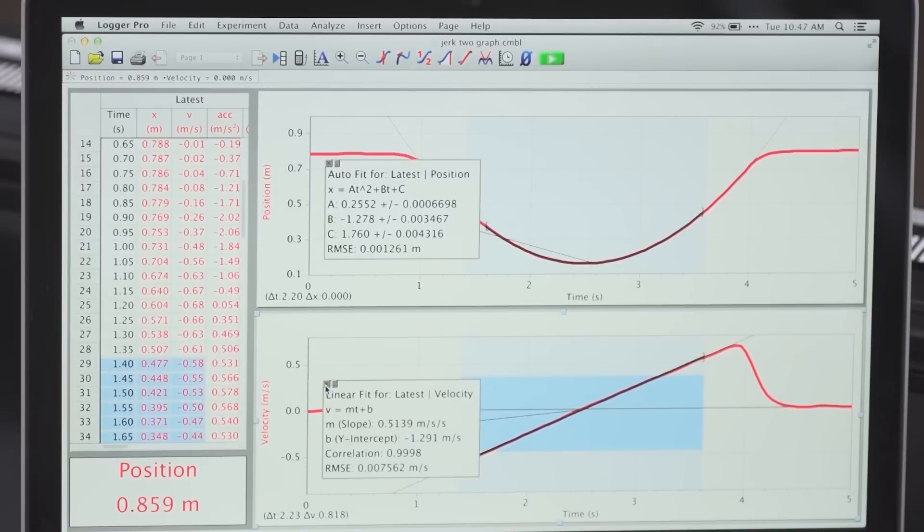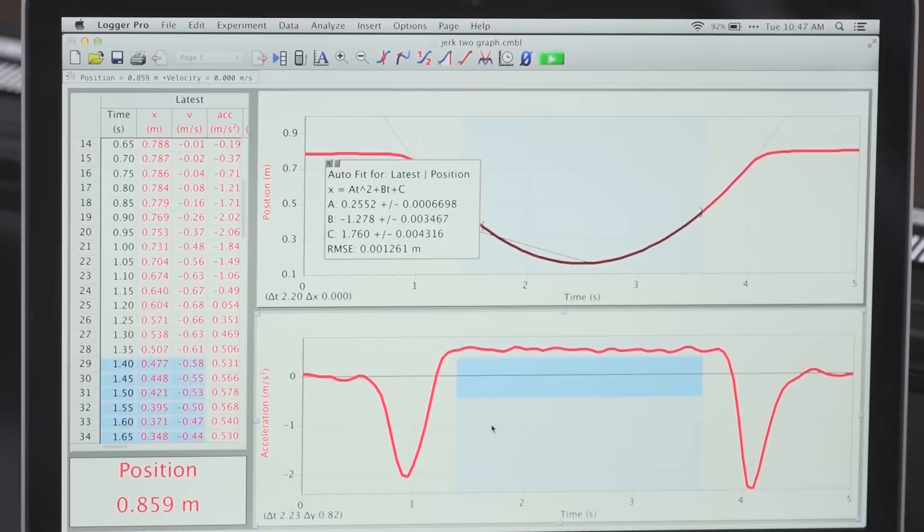Let's take a look at what the acceleration graph looks like for the motion encoder system. I'm just going to click on the y-axis label, and I'll get an acceleration graph. And you see that the part of the graph corresponding to the free-rolling motion of the cart is approximately constant.